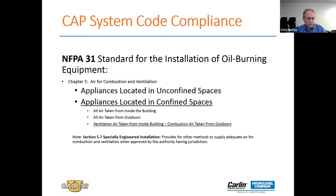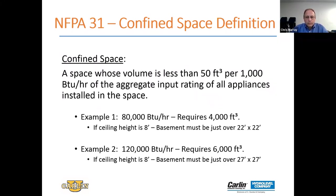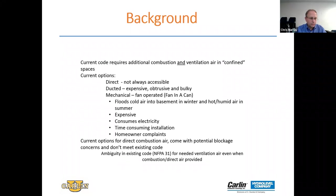In order to understand the regulations, it requires a bit of explaining. A confined space is listed as a space whose volume is less than 50 square feet per 1,000 BTUs. So for an 80,000 BTU appliance, you need 4,000 square feet — a room 22 by 22. At 120,000 BTU you go to 27 by 27, that's 6,000 square feet. When was the last time you saw an open basement 27 by 27 with no storage, no partitions, nothing but free open space?